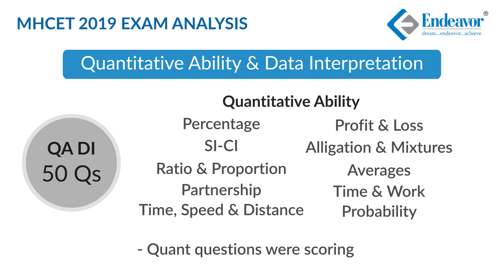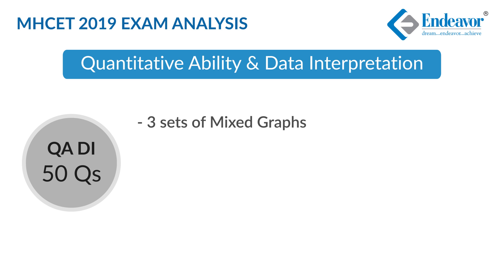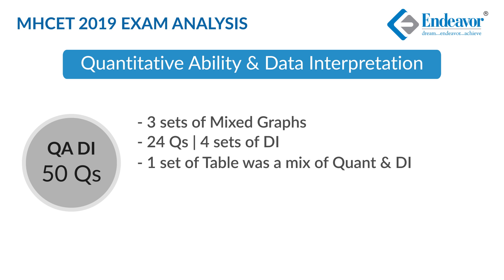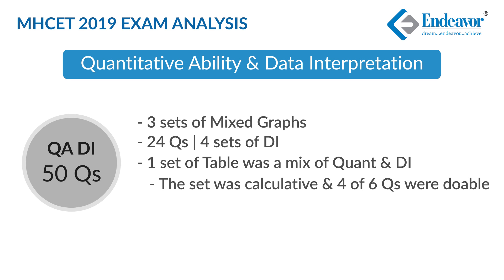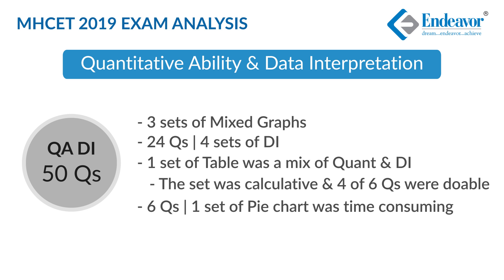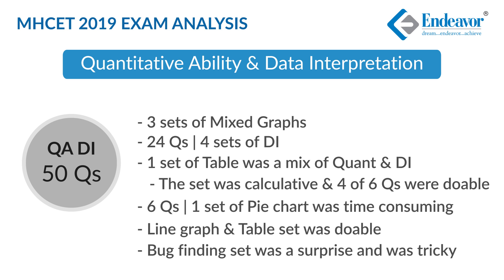The quant section was scoring if question selection was done properly. There were three mixed graph types of sets and four DI sets with six questions each. One set with a table was quite a blend of quant, ratio, and percentage — it had 6 questions and was a little calculative, but at least 4 questions out of 6 were doable. Another set with a pie chart with 6 questions was time-consuming. A line graph and table-based set was doable but required heavy question selection. One surprise set based on bug finding during programming was tricky, with extra conditions making it difficult for aspirants. Overall, the DI part of this section was moderate to difficult.